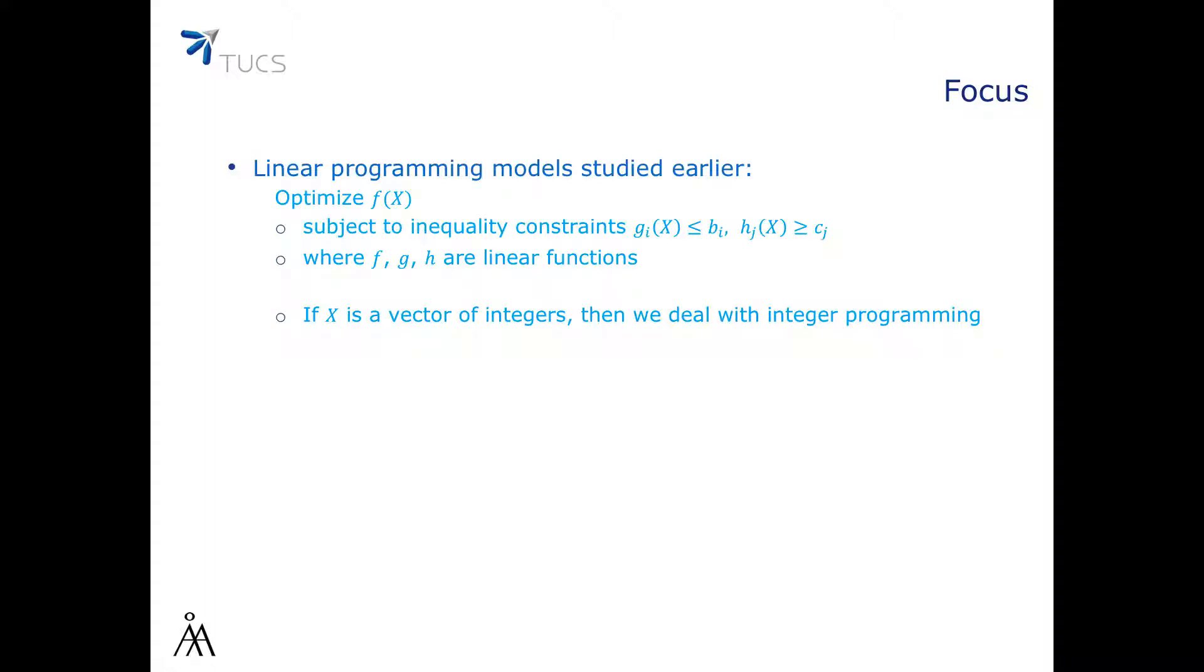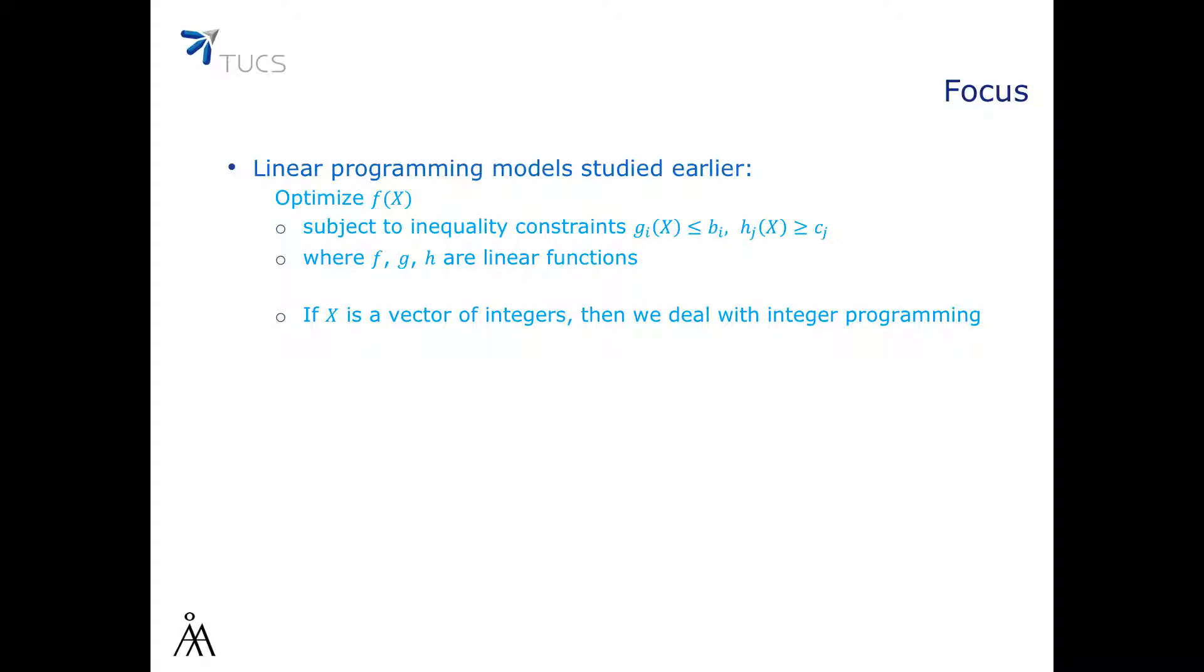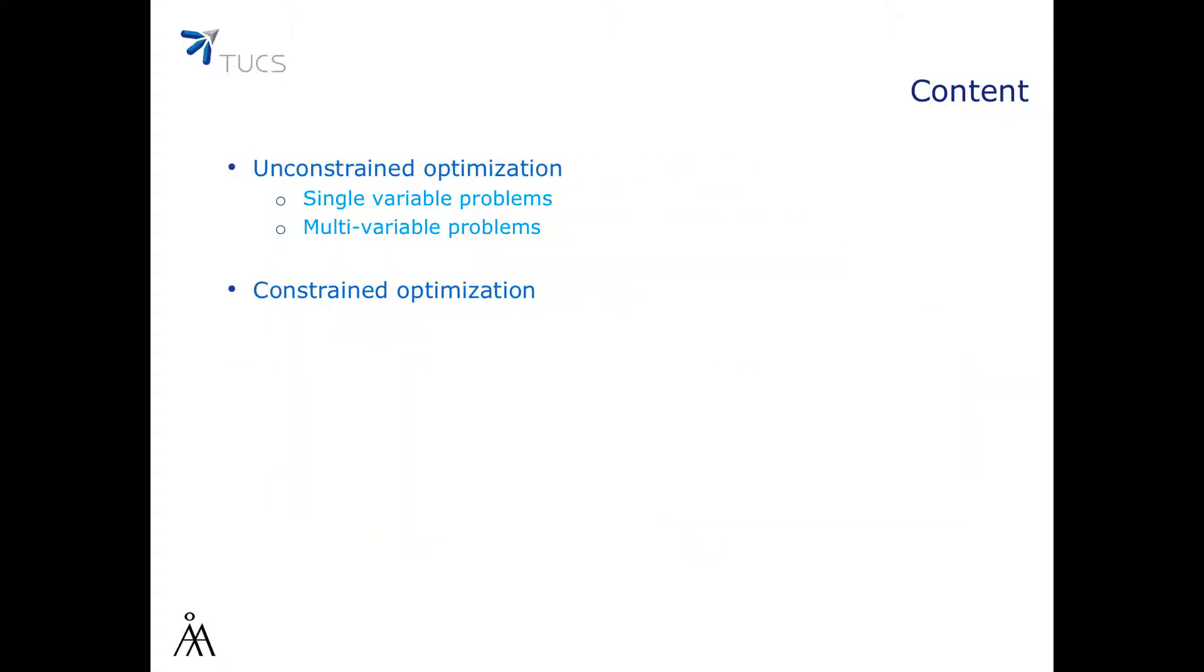We looked at optimization problems earlier in this course and we studied them with discrete tools. We looked at linear programming models where the goal was to optimize a function f subject to constraints that came in the form of linear inequalities. In this video and the next, we will look at optimizing continuous functions with the help of tools from continuous math. In this video, we focus on unconstrained optimization and we take the case of constrained optimization in the next video.